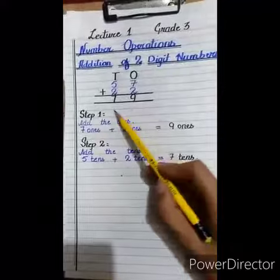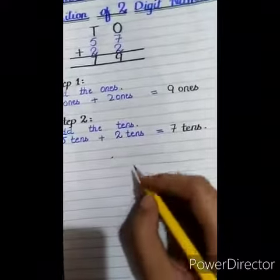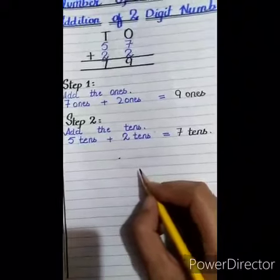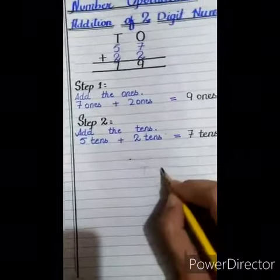Now, the answer is 79. Now, we will give you an example of tens and ones.